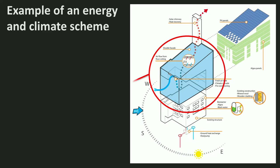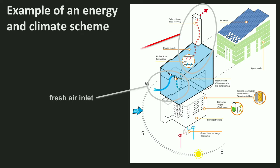He also added a double facade — a layer of glass over the existing building. Fresh air is let in through this double skin, passes through the building floor to ceiling, and leaves the building through a solar chimney. At the top of this chimney, heat is recovered from the air — you can only do that at the top, because otherwise the thermal draft will not work.